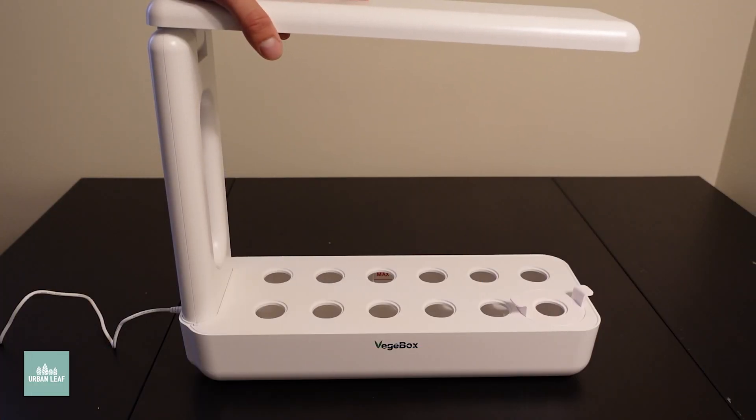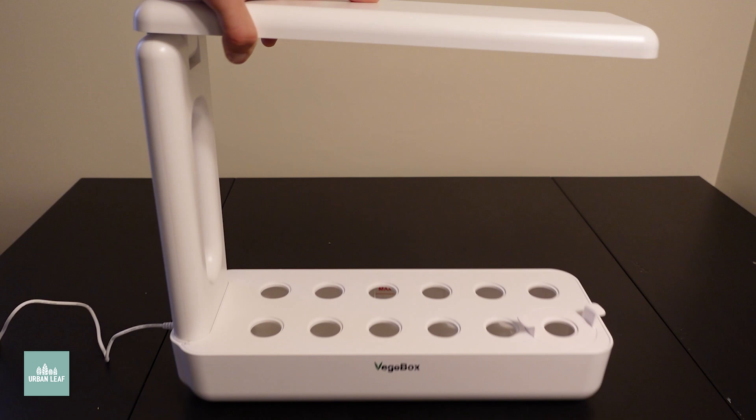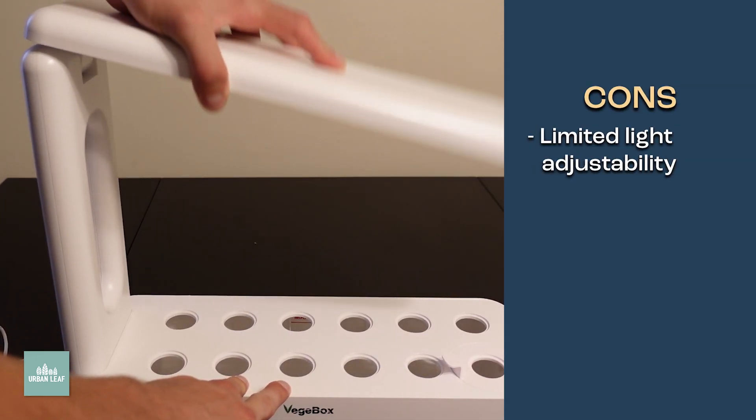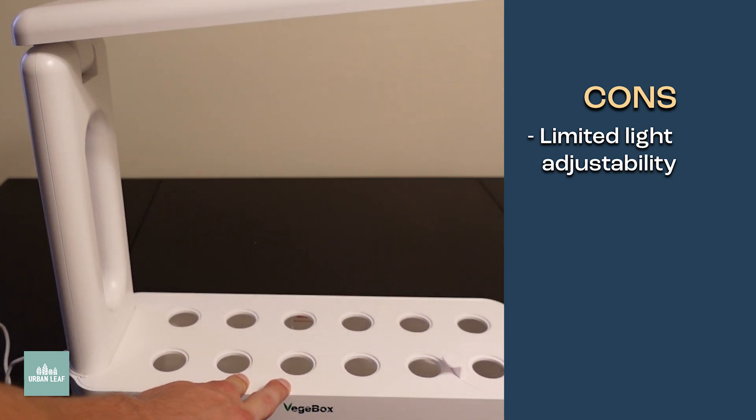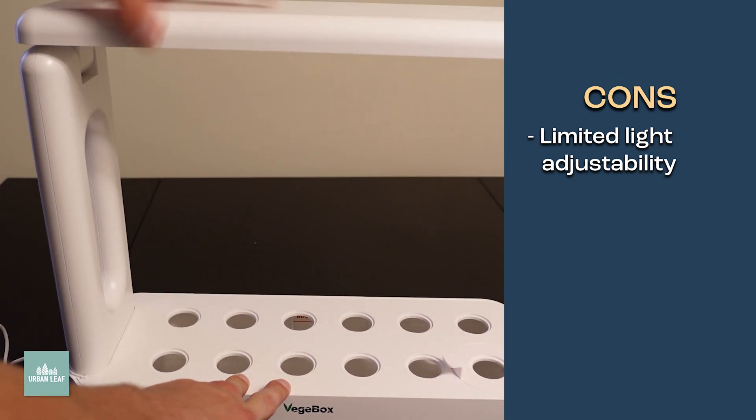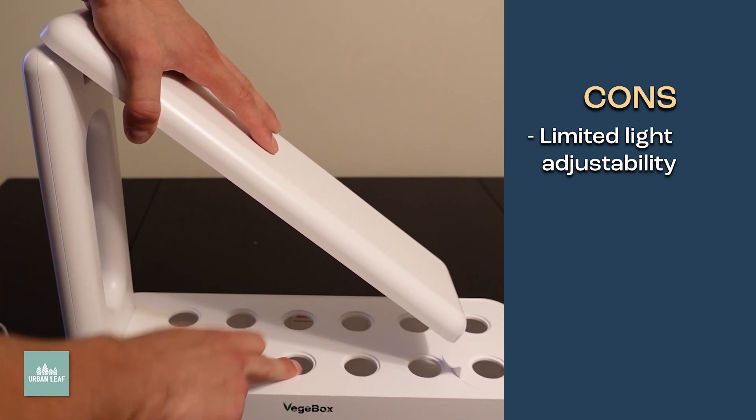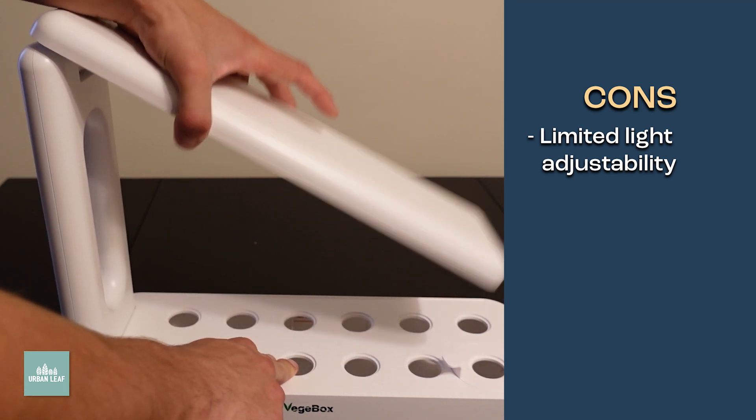Pros and cons. We'll start off with the cons, then it goes to the pros. This light right here, not a big fan of the way that this bends. You might as well just fix it right there because you're not going to get much benefit unless maybe you're just doing seedlings right here, bending it down like this.